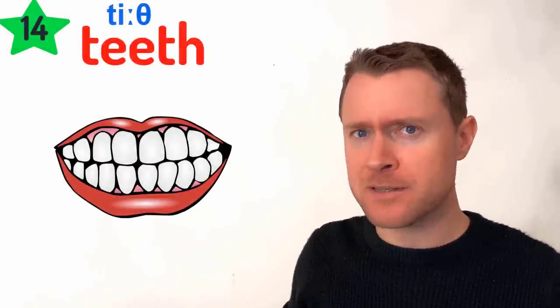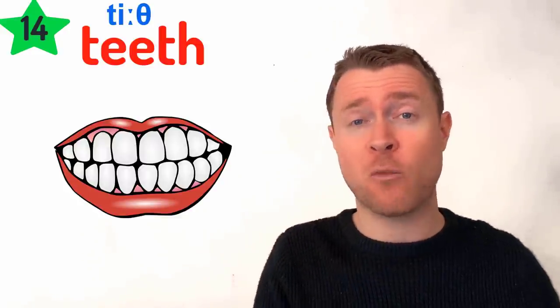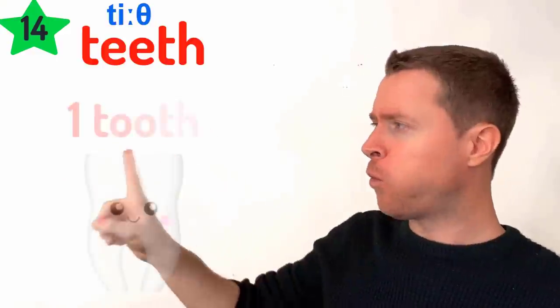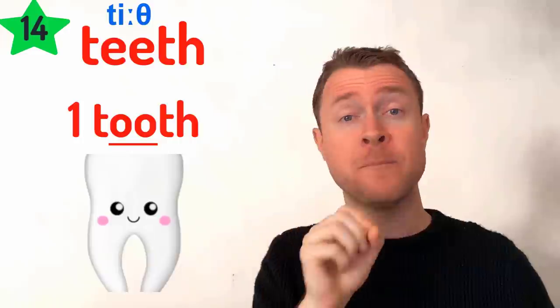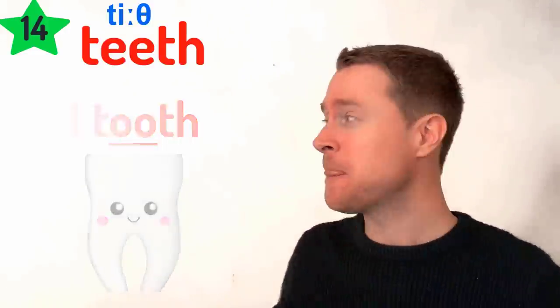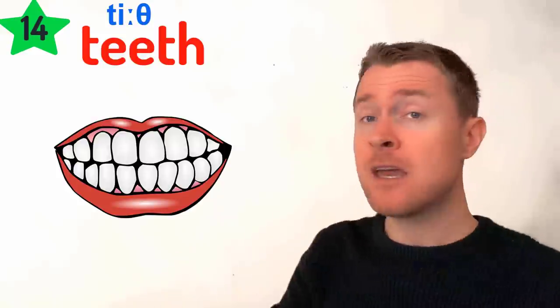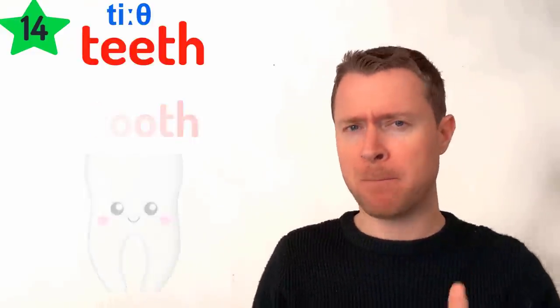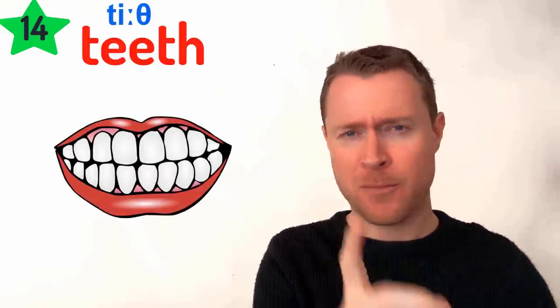Then, of course, inside your mouth you have your teeth. This one's a little different because the word changes spelling depending on whether we're talking about one or many. One tooth — with the double 'OO.' But many teeth — with the 'EEE' sound. Tooth and teeth. Make sure you practice that one a lot.